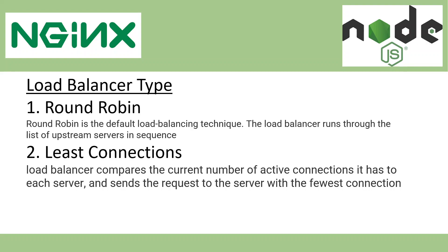The second type is Least Connections. For example, if Node application one is currently handling 500 requests, Node application two is handling 200 requests, and Node application three is handling 350 requests — when a new request comes to Nginx, it will transfer the request to Node application two because that has the least connections at that point in time.